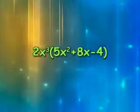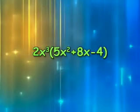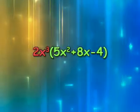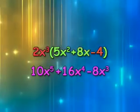In the case of monomials and polynomials, use the distributive property along with the laws of exponents. Multiply 2x³ by 5x², then by 8x, and finally by -4.